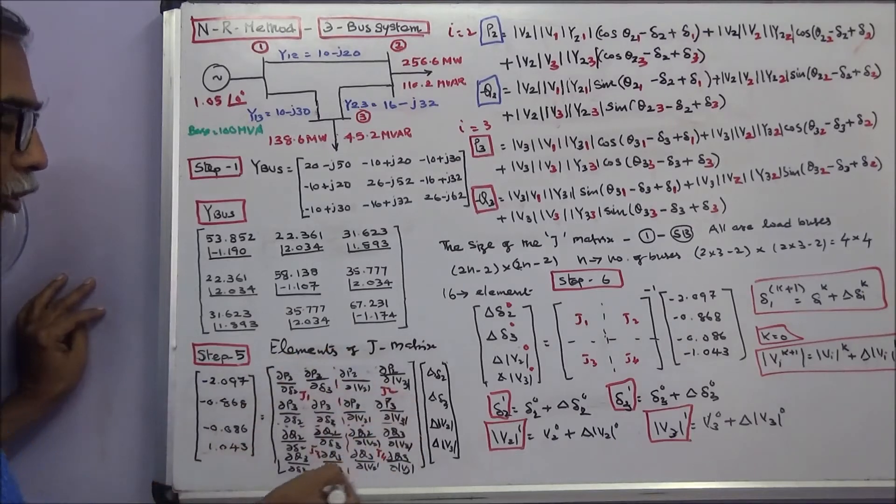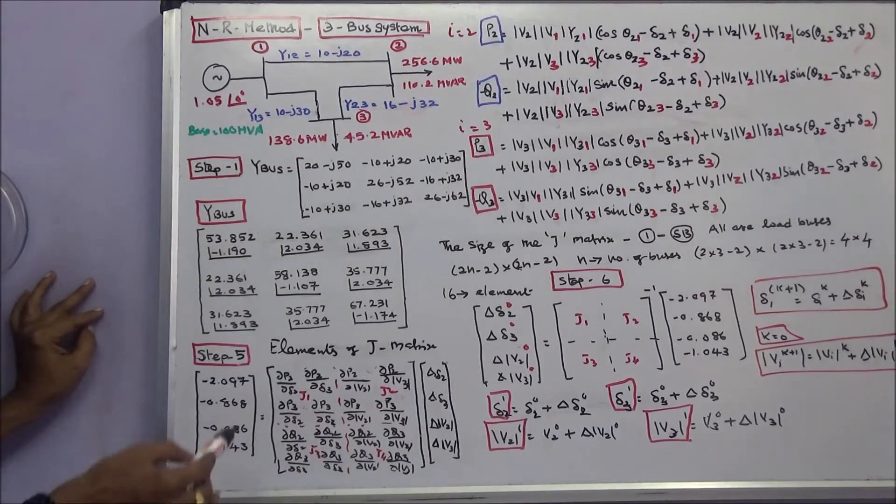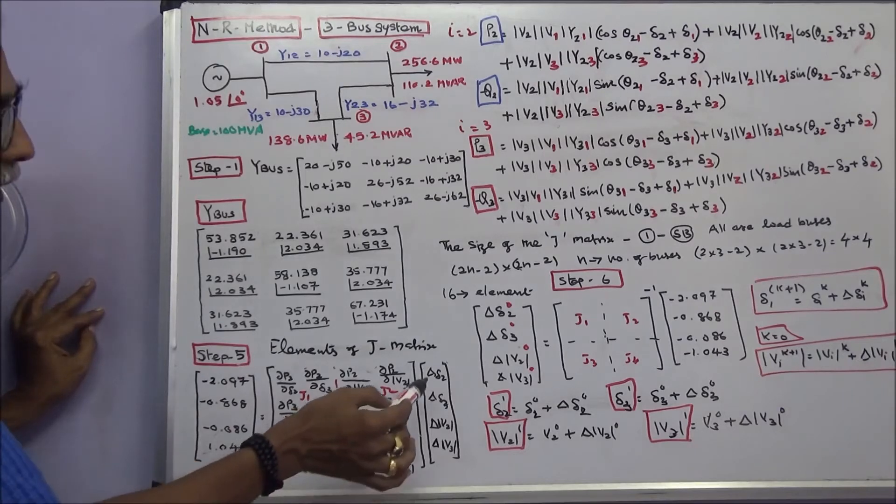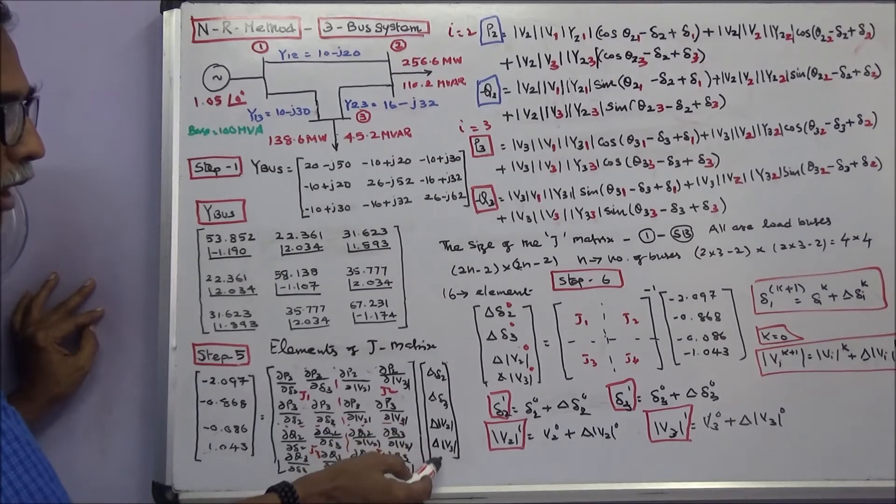Step 5 we have to form a Jacobian matrix. So J1, J2, J3, J4. This is del P2, del P3, del Q2, del Q3. This is del delta 2, del delta 3, del modulus of V2, del modulus of V3.